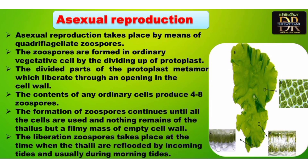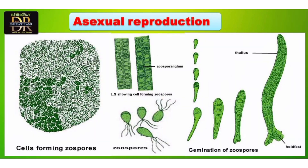Now here is reproduction — how reproduction occurs in Ulva. It has both types of reproduction: asexual and sexual. In asexual reproduction, zoospores are formed. The protoplast of each cell divides to form zoospores; the contents of any ordinary cell will produce four to eight zoospores.